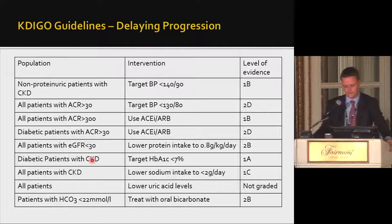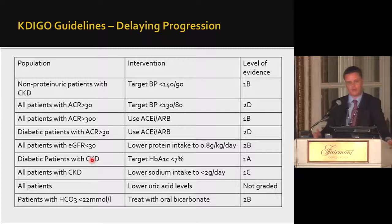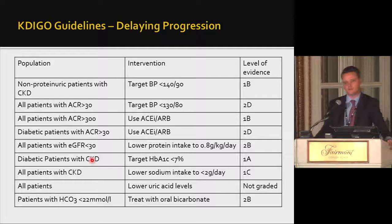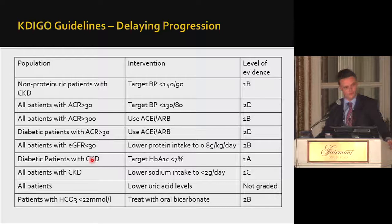How can we delay progression of CKD? The 2012 KDIGO guidelines for prevention of CKD progression rate each intervention for level of evidence. One means they recommend, two means they suggest; level A means high evidence, B moderate, C low, and D very low. The only guideline that received a 1A recommendation was that individuals with diabetes should keep their HbA1c below 7%, based on randomized controlled trials.